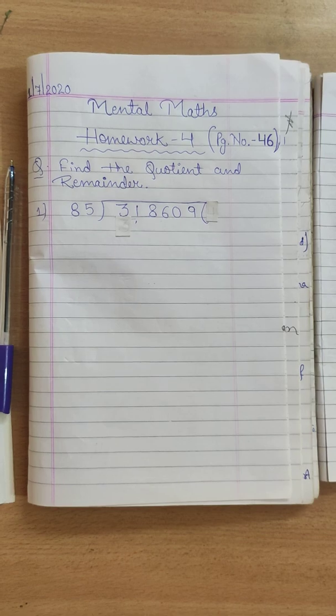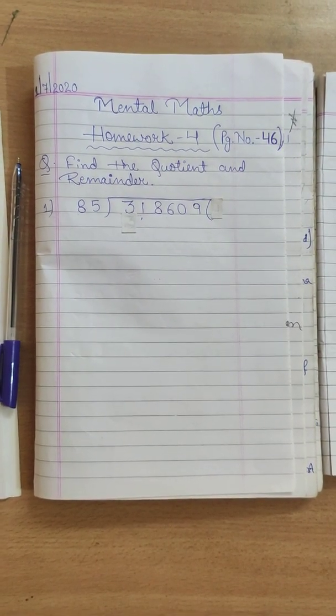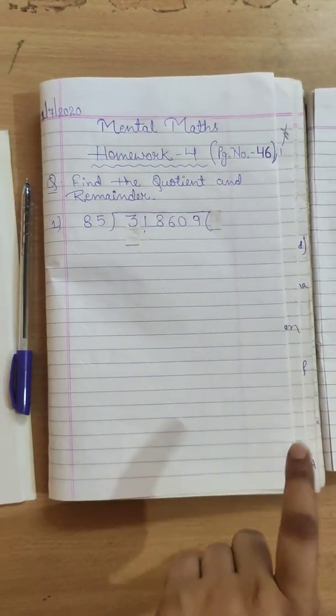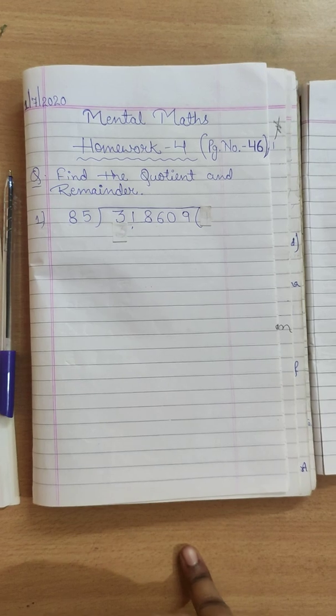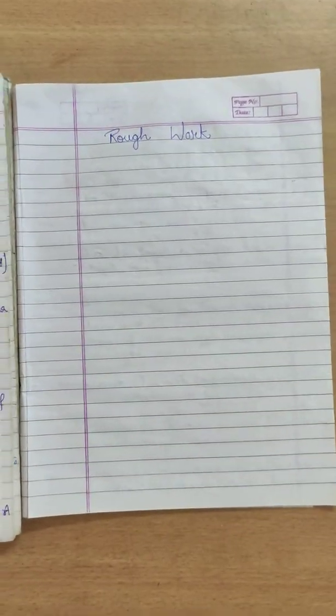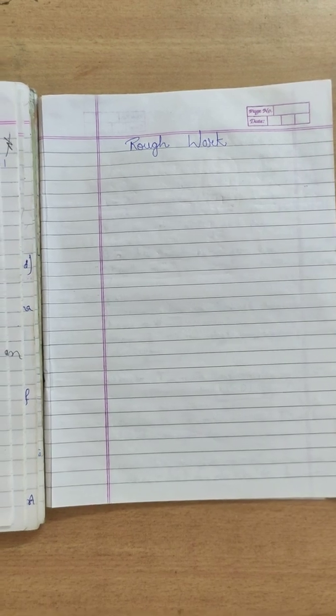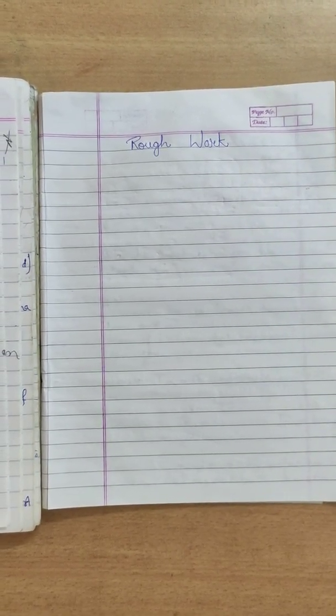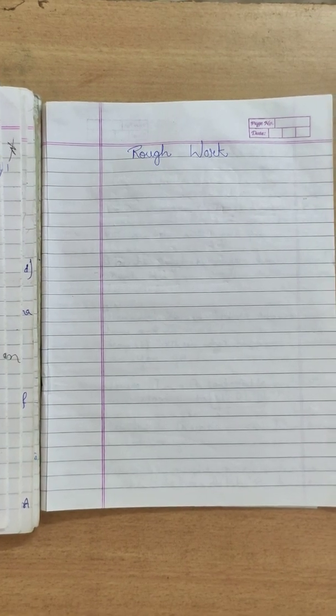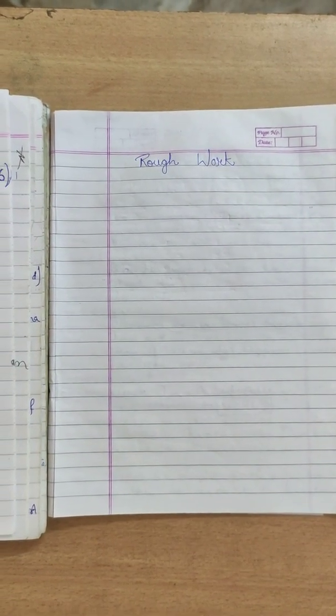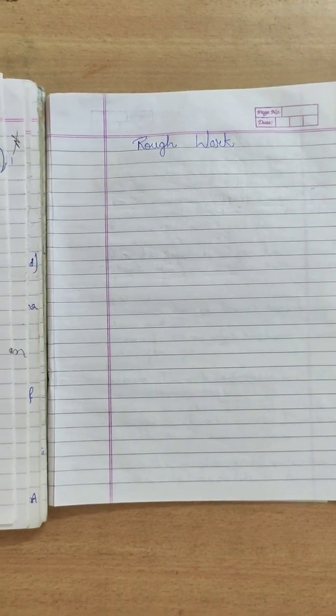So no problem. Let's try to make the table of 85. Make the rough work column on the side of your sheet. So I was not having enough space, so I have made the rough work column on the next sheet of my notebook. You can also make the rough work column. Now I will just tell you how to make the table of 85.